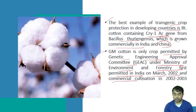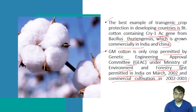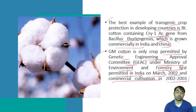Commercial cultivation began in 2002 to 2003. One thing you must remember: the GM crop has to be approved by the Genetic Engineering Approval Committee, and this comes under the Ministry of Environment and Forest — not the Ministry of Agriculture, as students are often confused.